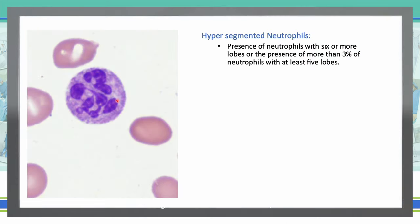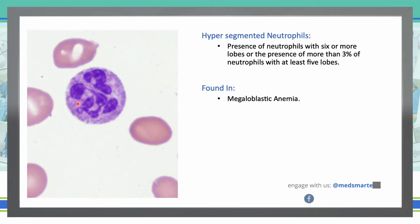Hypersegmented neutrophils can be defined as the presence of neutrophils with six or more lobes, or the presence of more than three percent of neutrophils with at least five lobes. The presence of hypersegmented neutrophils is an important diagnostic feature of megaloblastic anemia.